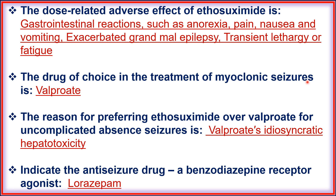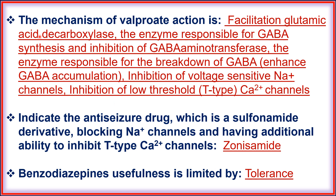The drug of choice in the treatment of myoclonic seizure is valproic acid (valproate). The reason for preferring ethosuximide over valproic acid for uncomplicated absence seizure is valproate's idiosyncratic reaction — specifically hepatotoxicity. The mechanism of valproate action includes facilitation of GABA synthesis via glutamic acid decarboxylase, inhibition of GABA aminotransferase (reducing GABA breakdown), and thereby enhancing GABA accumulation.